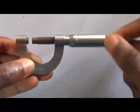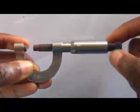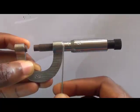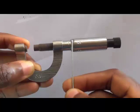The micrometer screw gauge has two scales which are the main scale and the vernier scale.